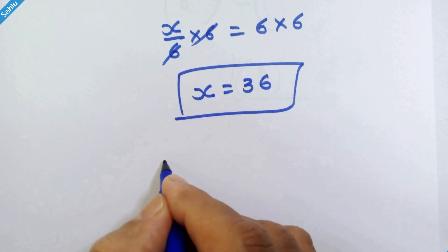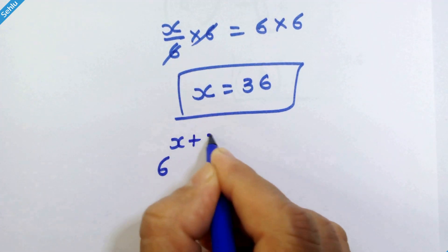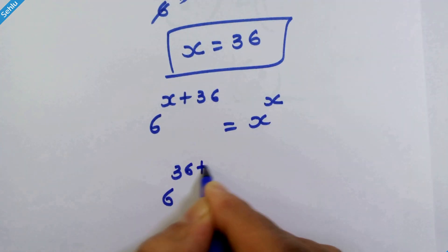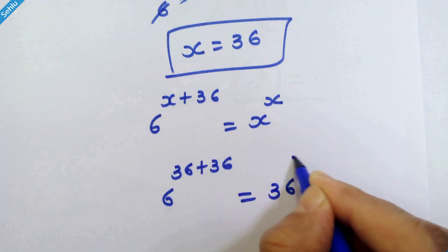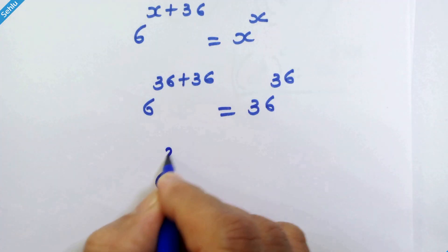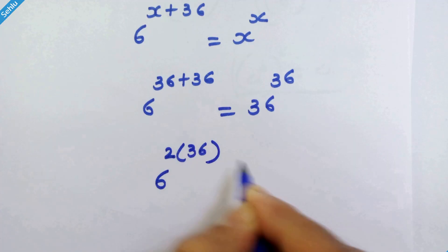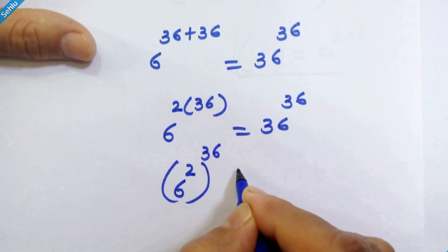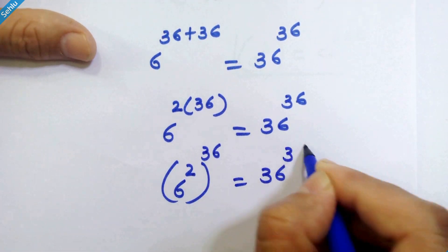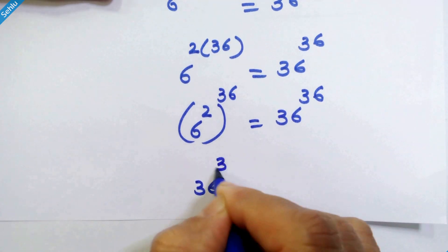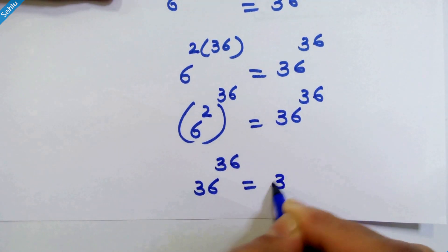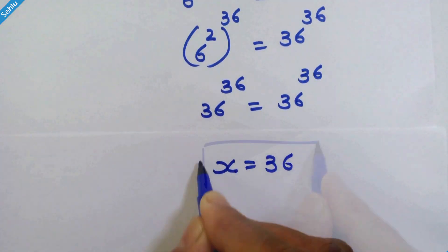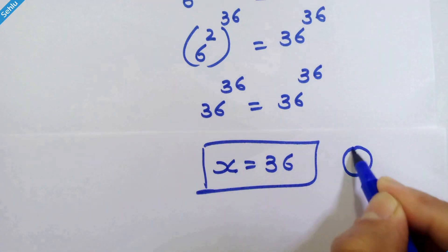Our main equation is 6 raised to x plus 36 is equal to x raised to x. Substituting x = 36: 6 raised to 36 plus 36 is equal to 36 raised to 36. 6 raised to 2 into 36 is equal to 36 raised to 36. 6 squared, whole raised to 36 is equal to 36 raised to 36. So 36 raised to 36 is equal to 36 raised to 36. So x is equal to 36 is the correct answer.